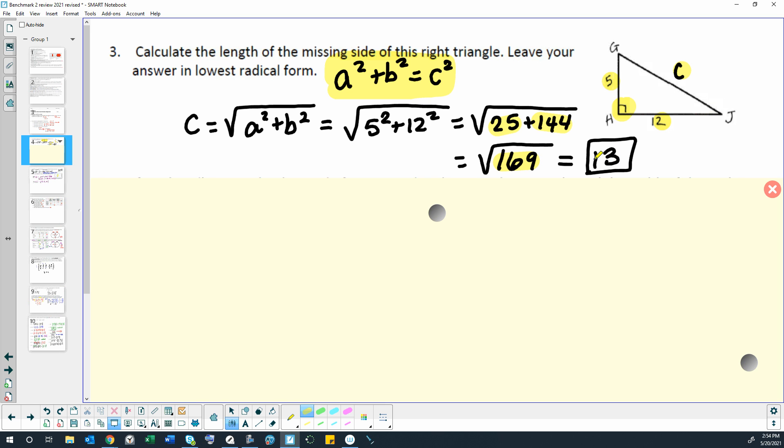The exact answer for this problem is 13 in length. This is a Pythagorean triple: 5, 12, 13. That means those three numbers are whole numbers that work perfectly in Pythagorean theorem.